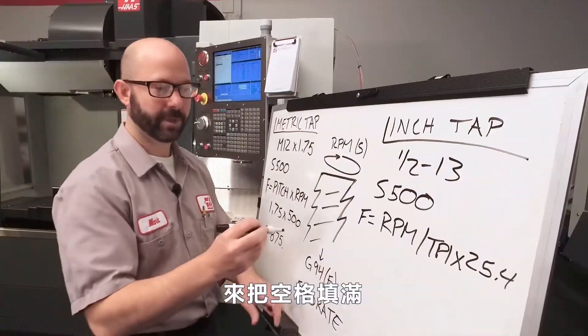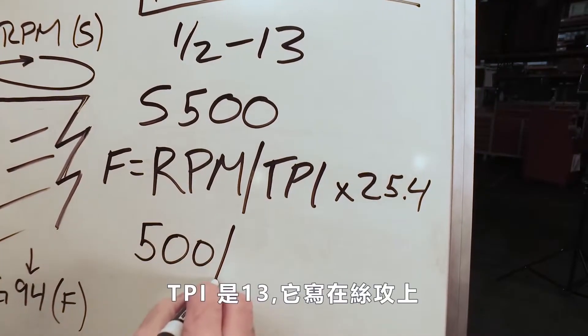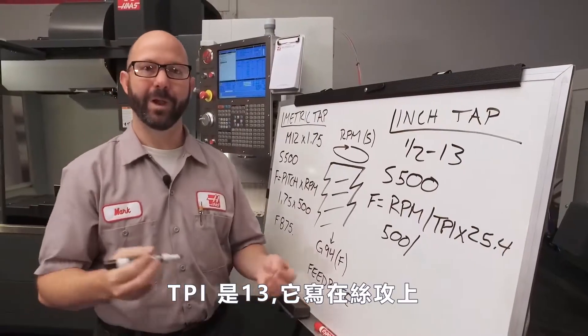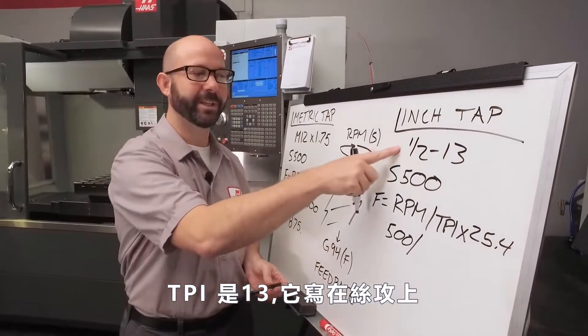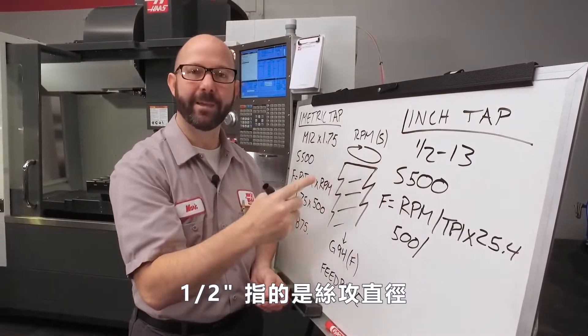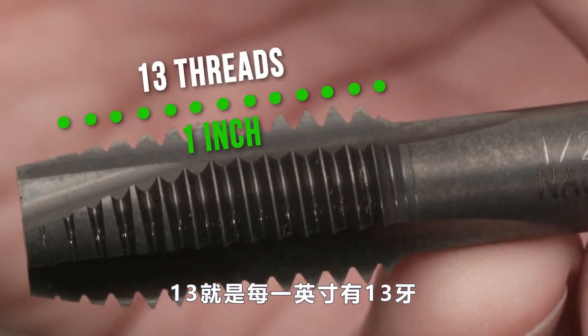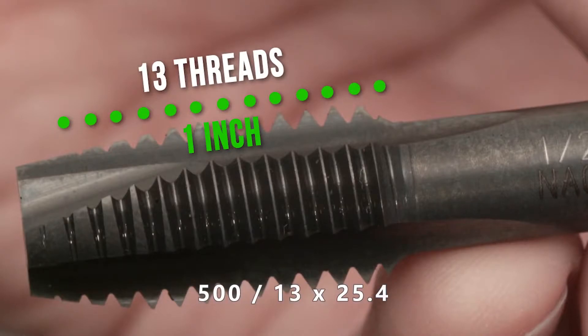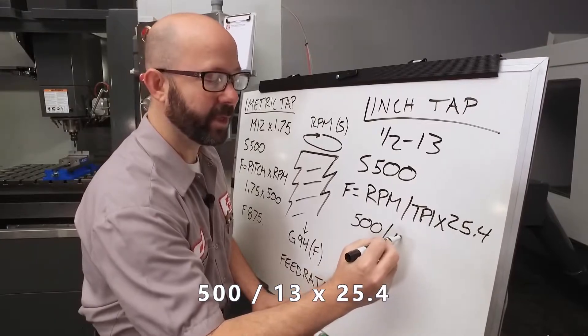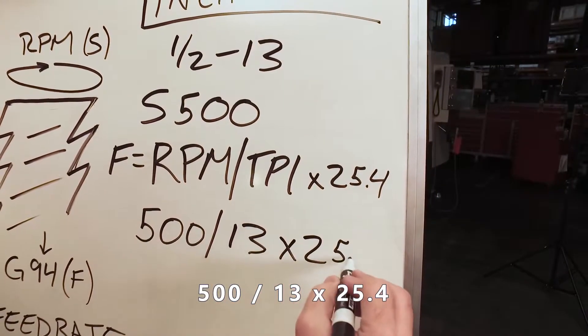Let's fill in our formula. 500 RPM divided by, but what is our TPI? Well, I'm lucky again because it's written in the name of my tap. One half inch is the basic diameter, and 13 is the number of threads per inch, TPI. So we're going to enter 500 RPM divided by 13 threads per inch times 25.4.